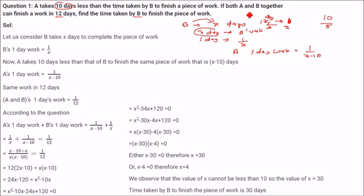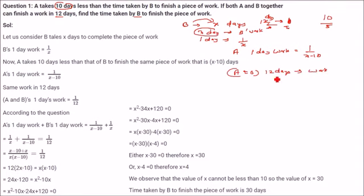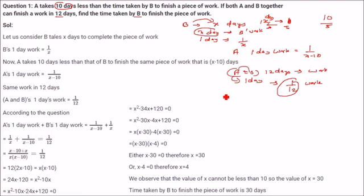So now if A and B together can finish the work in 12 days, that means their combined one day work equals 1 by 12 of that work. So 1 by X plus 1 by X minus 10 equals 1 by 12.